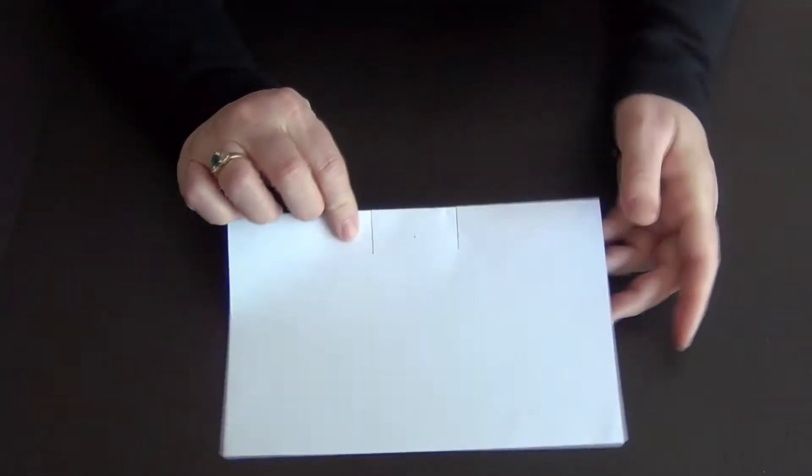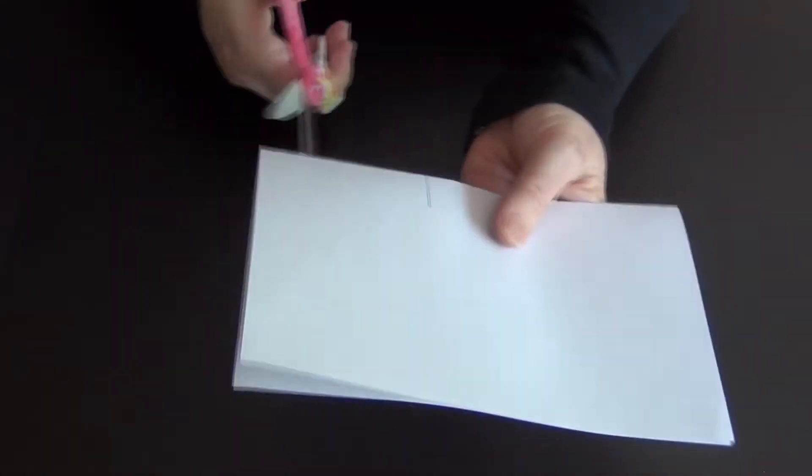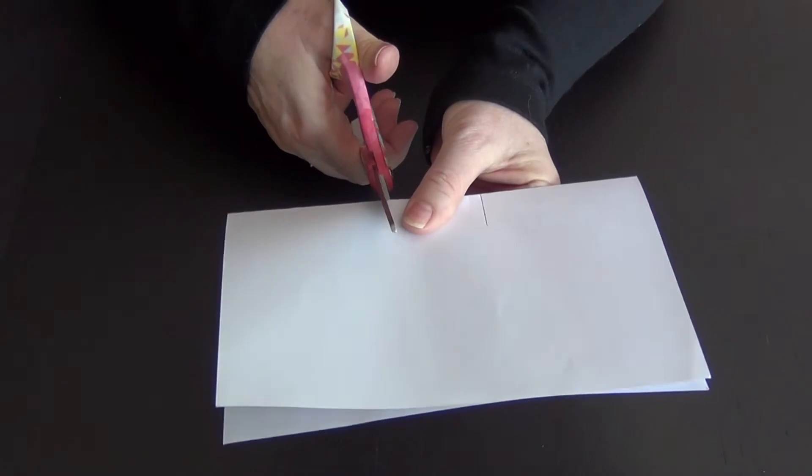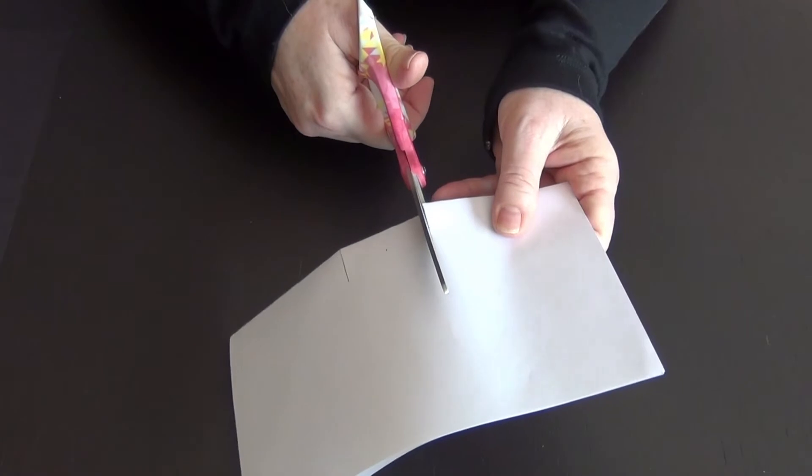Now these two lines are going to mark where we're going to cut with our scissors. So we're going to make the first cut. Make the second cut. There you go.